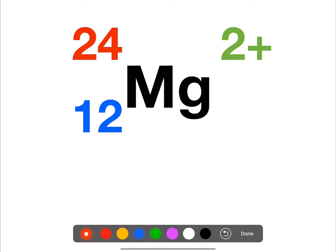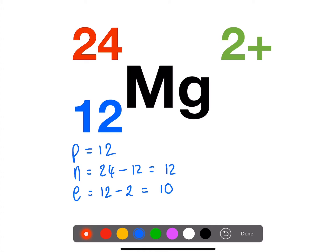Here we have one with a charge. So again calculating protons, neutrons, and electrons. Protons is the same as the atomic number. Neutrons is the mass number minus the atomic number. And electrons is the atomic number minus the charge. So in this case we've lost two electrons, so we only have 10.